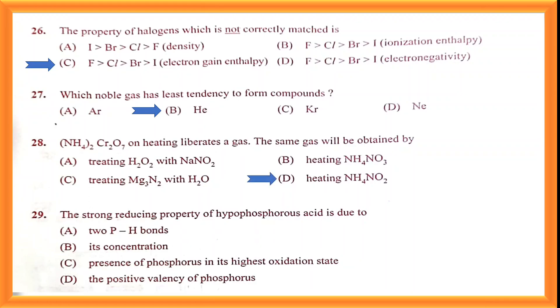Question number twenty-nine: the strong reducing property of hypophosphorous acid is due to the presence of phosphorus in its highest oxidation state. Option C is the correct answer.